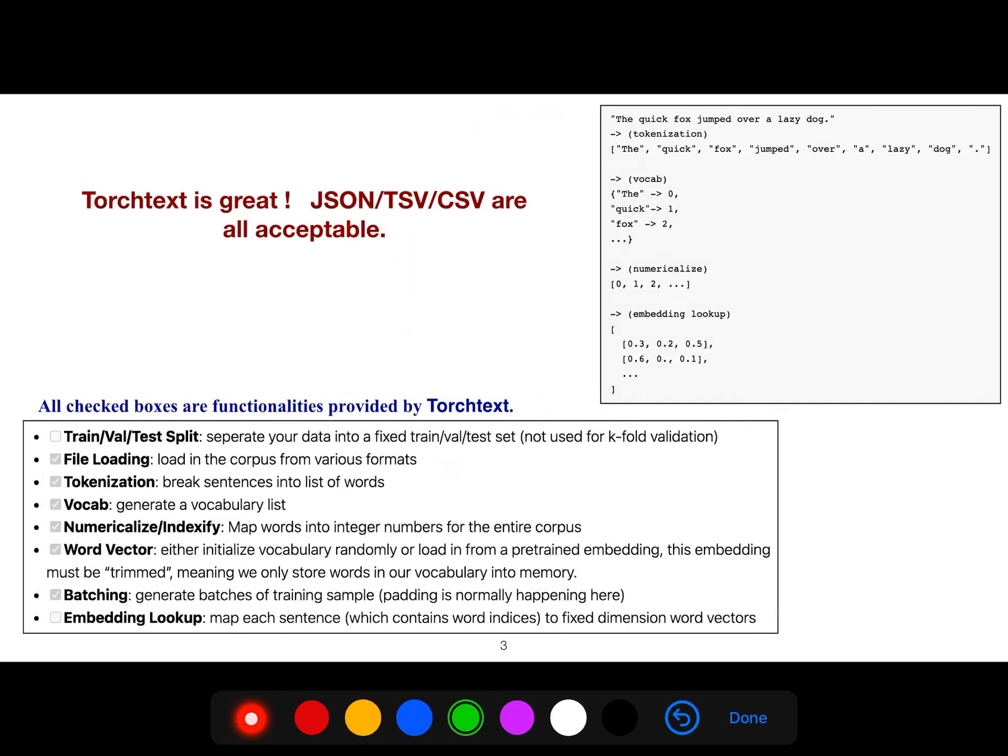So TorchText is the library that I love because it helps you to work with JSON, TSV, and CSV files in order to create these preprocessing. What are these preprocessing types? It's file loading, tokenization where you break the sentence into lists of words, but those words are unique and you assign integers to them.